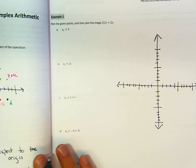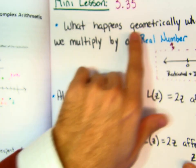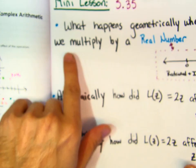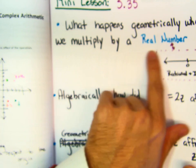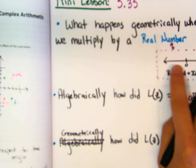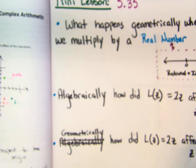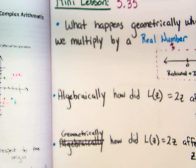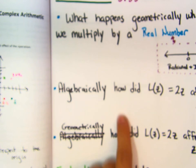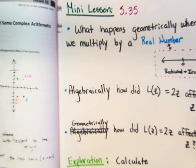Continuing with the lesson — the game plan for this exploration is to figure out what happens geometrically when we multiply by a real number. Remember, a real number is on the number line and it's either rational or irrational.